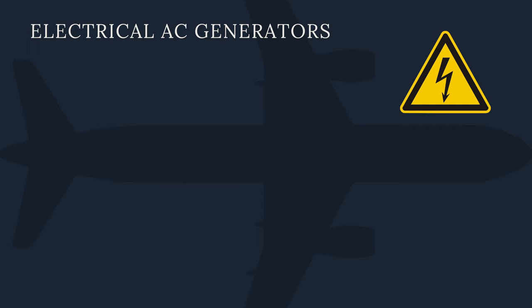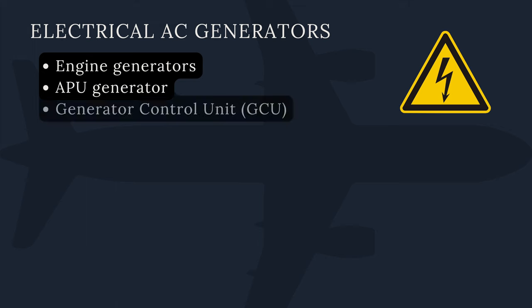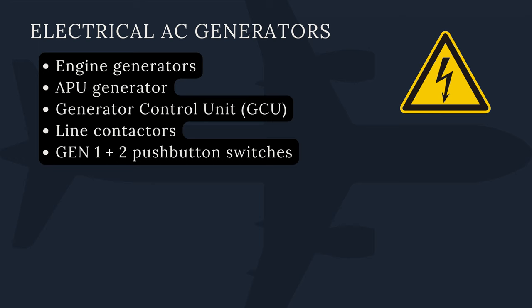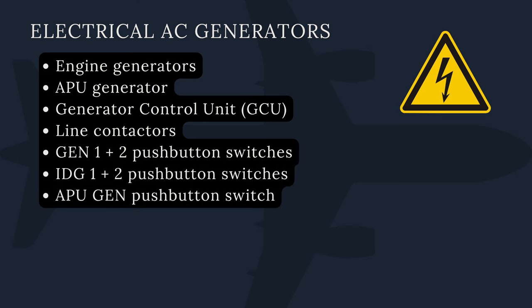Hello everyone. In this video we will be discussing the electrical AC generators in an Airbus A320. We will discuss engine generators, APU generator, generator control unit or GCU, line contactors, generator 1 and 2 push button switches, IDG 1 and 2 push button switches, APU generator push button switch, and ECAM indications. Now let's start.